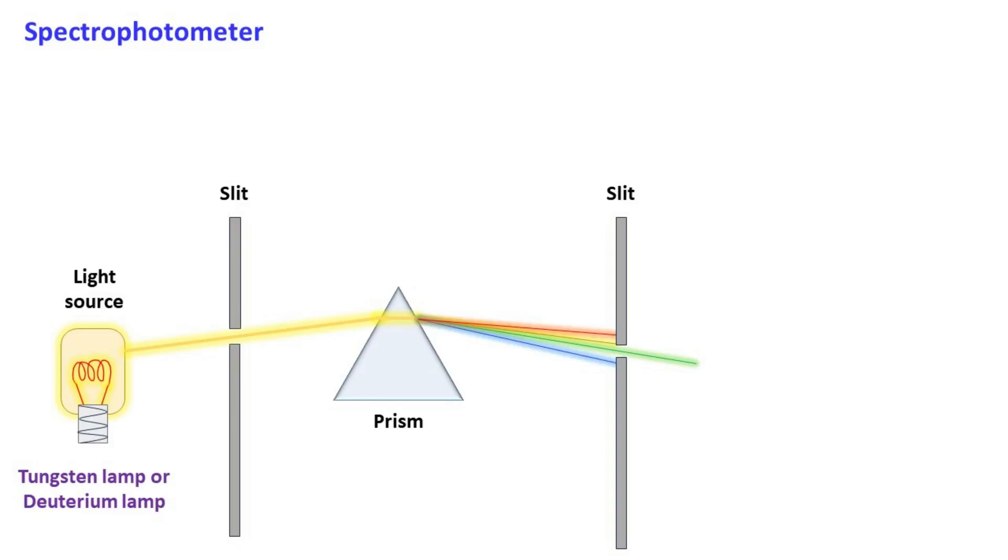Next to the slit, we have the sample holding cell which holds the cuvette containing our sample. The cuvette can be made of plastic, glass, or quartz. Usually, a quartz cuvette is used for samples that absorb UV light.